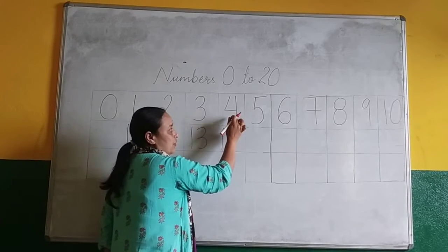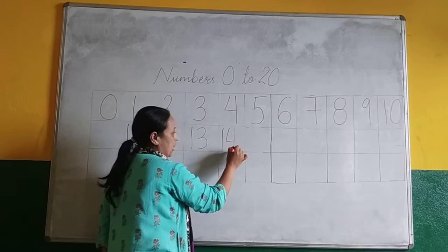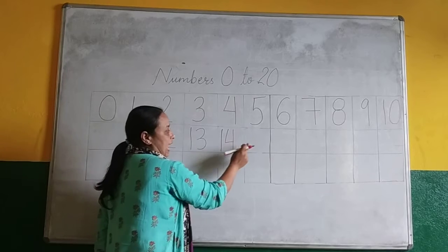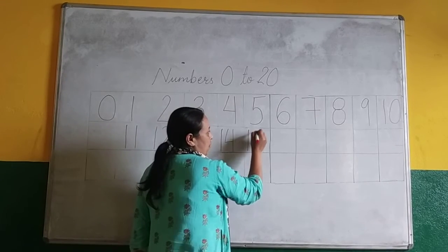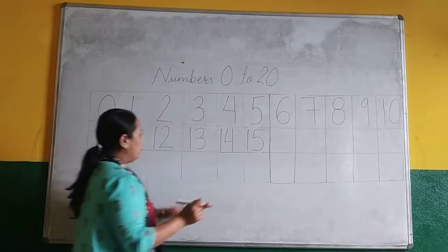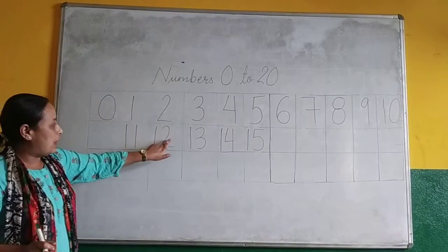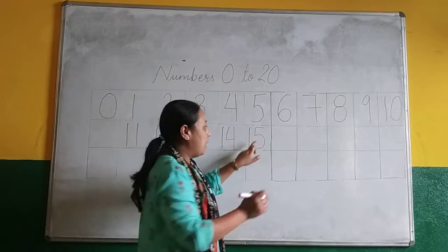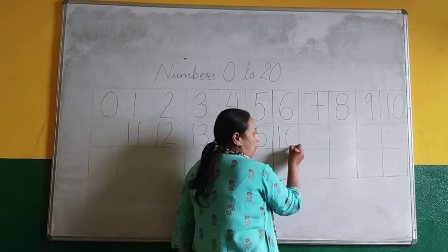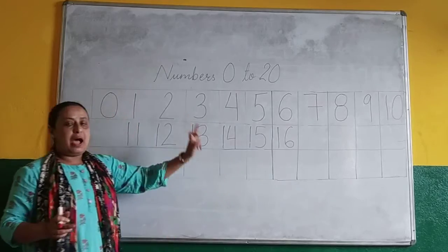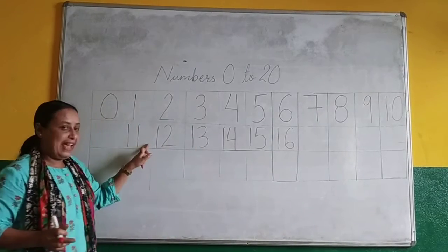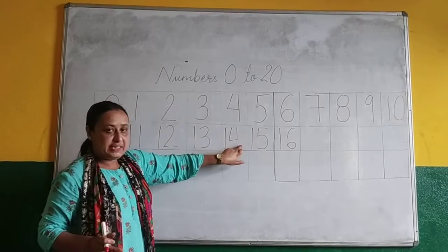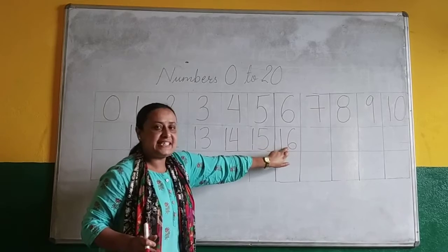1, 4, 14. 1, 11, 1 to 12, 1, 3, 13, 1, 4, 14. What do you have to write? 1, 5, 15. Again count from here. 1, 11, 1 to 12, 1 to 13, 1, 4, 14, 1, 5, 15. You have to write 1, 6, 16. Don't say 1, 6, 16. You have to say 1, 6, 16.